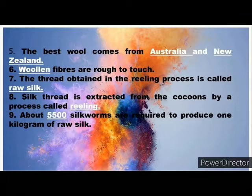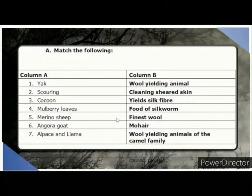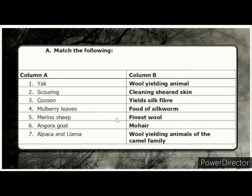Woolen fibers are rough to touch. The thread obtained in the reeling process is called Raw silk. Silk thread is extracted from the cocoon by a process called Reeling. About 5,500 silkworms are required to produce 1 kg of raw silk. Match the column: Yak — wool-giving animal; Camel — wool-giving animal; Mulberry — cocoons eat silk fibers; Finest wool — Angora goat, Mohair; Alpaca and Llama — wool-giving animals of the Camel family.